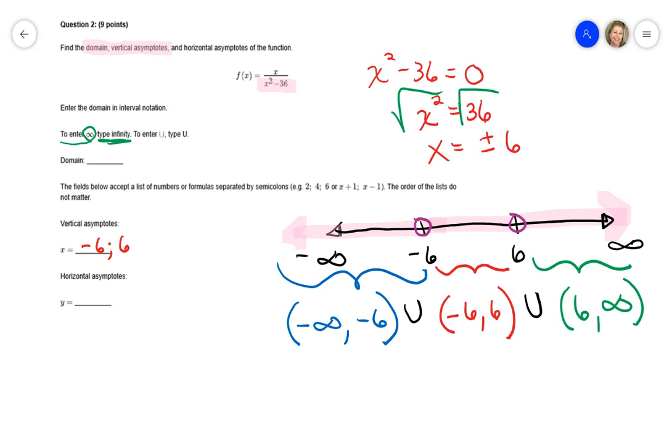Domain and vertical asymptotes are easy. Horizontal asymptotes, a little different. There's some rules about this. And it has to do with the fraction as a whole. The numerator has an x to the first. The denominator has an x to the second. When the numerator's exponent is less than the denominator's exponent, then your horizontal asymptote will be at y is equal to 0.